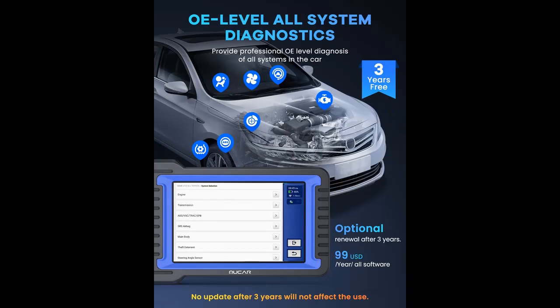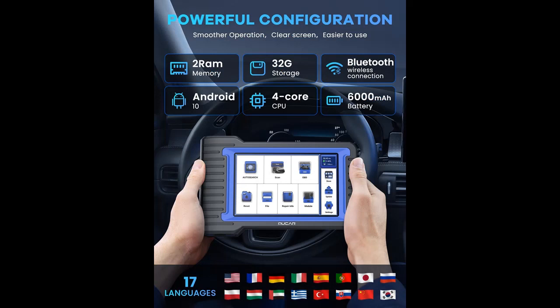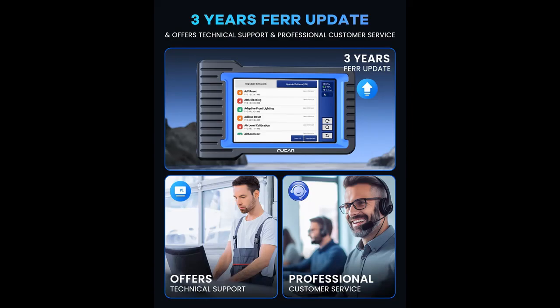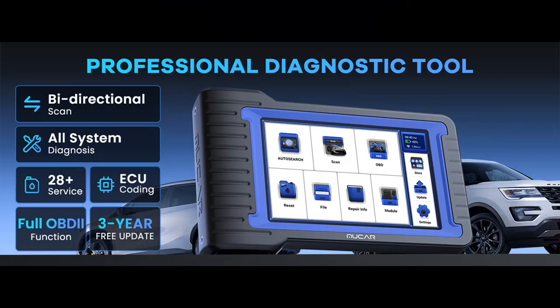Systems Diagnosis is free for 3 years. If you do not renew after 3 years, this still does not affect the use of diagnostic functions. The Mucar V07 Smart Diagnostic Scanner's AutoVIN feature helps identify vehicle information automatically to diagnose and repair vehicles effortlessly. With just one click, quickly detect and clear fault codes in all systems, and the feedback feature allows customers to get professional assistance via phone or email at any time.